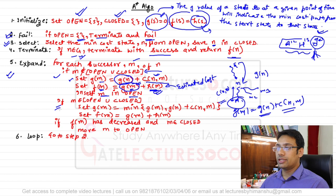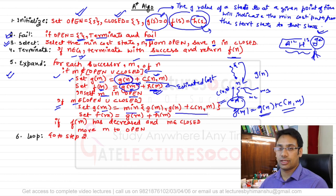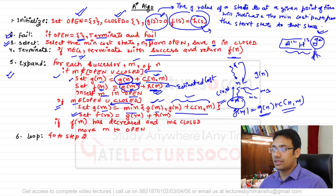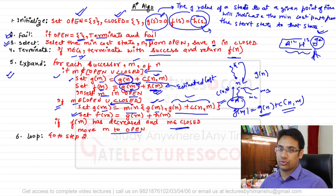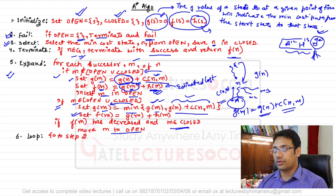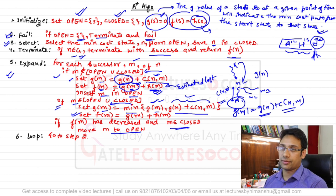If M is already in Open or Closed, update g(M) = min(current g(M), g(N) + cost(N, M)) — take the lesser of the two known costs. Then update f(M) = g(M) + h(M). If f(M) has decreased and M is in Closed, move M back to Open and go to step two. This is how the A* algorithm works. Let us now take an example and apply this algorithm to find a solution.